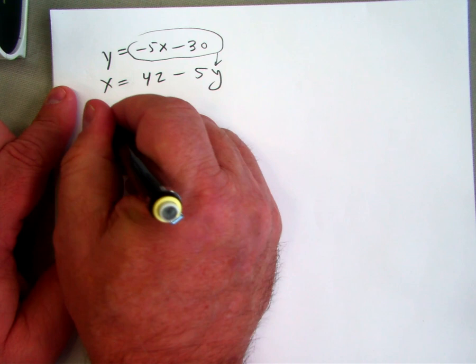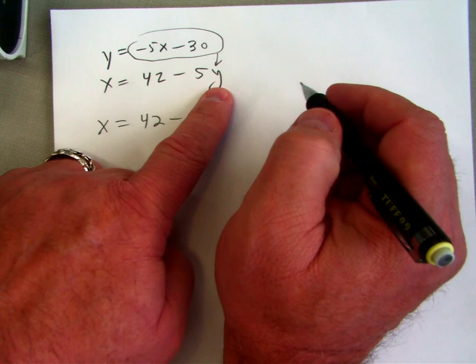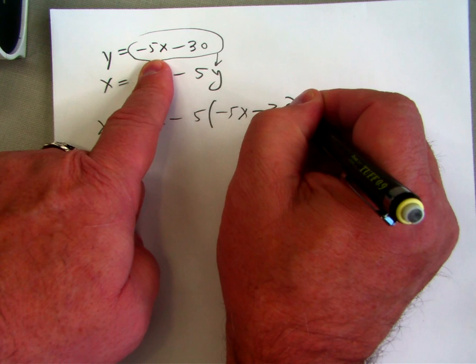So I have x equals 42 minus 5. The y equals negative 5x minus 30. And I can do a system.